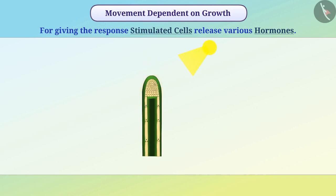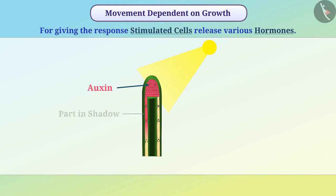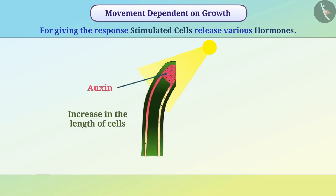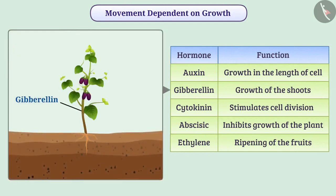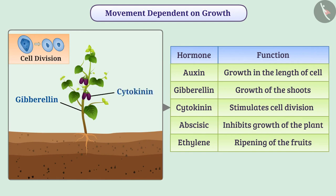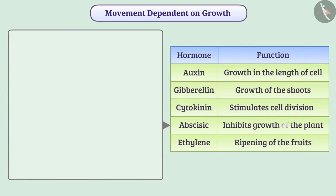When light comes from one direction, auxin diffuses from the tip of the plant towards the part away from the light, increasing auxin concentration there, causing greater cell elongation on that side and turning the plant towards the light. Similarly, the hormone gibberellin causes growth of the shoot. Cytokinin stimulates cell division, so its concentration is higher in plant parts like fruits and seeds. Auxin, gibberellins, and cytokinin help the plant grow.